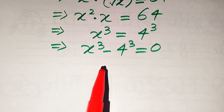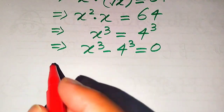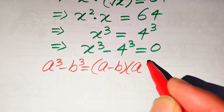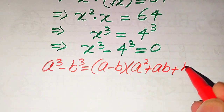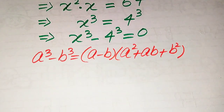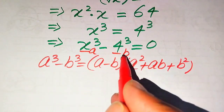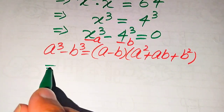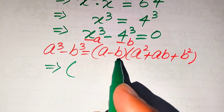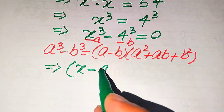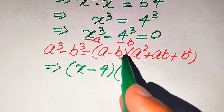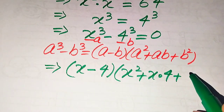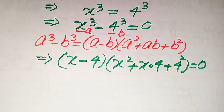We use a nice cubic formula to solve this equation. We know that a cubed minus b cubed is equals to a minus b, times a squared plus ab plus b squared. Here, the base of the first term is our a and the base of the second term is our b. After substituting, it becomes x minus 4, times x squared plus x times 4 plus 4 squared, equals 0.